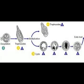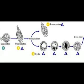Infection occurs when an individual ingests mature cysts through fecally contaminated food, water, or hands. Once the cyst is ingested and reaches the small intestine, the contained trophozoites are released and continue to travel to the large intestine, where they multiply through binary fission and produce cysts. Both the cysts and the trophozoites are then passed through the intestine and expelled in the feces.